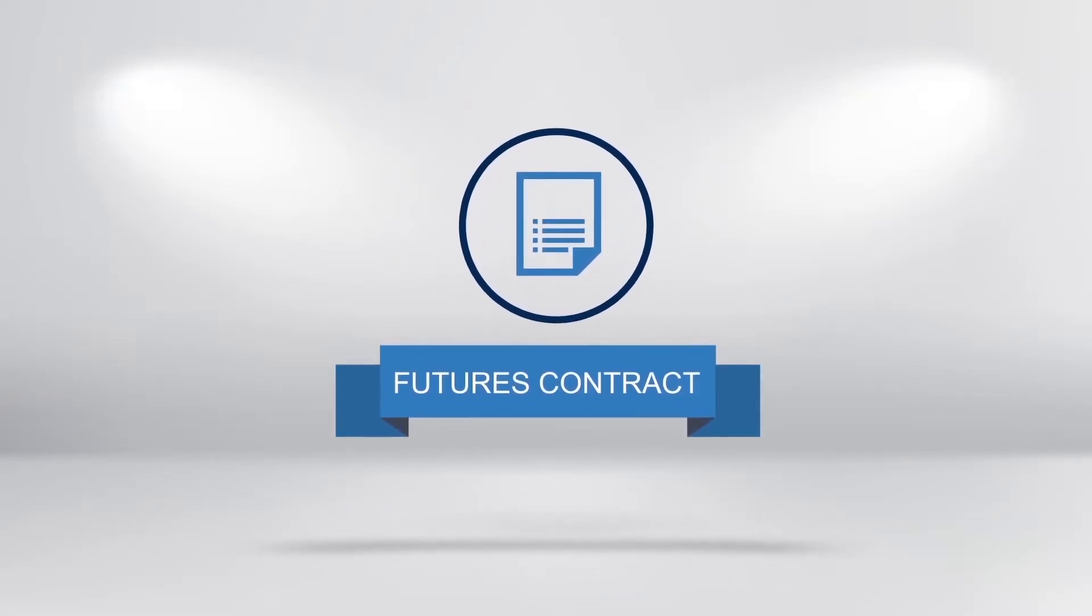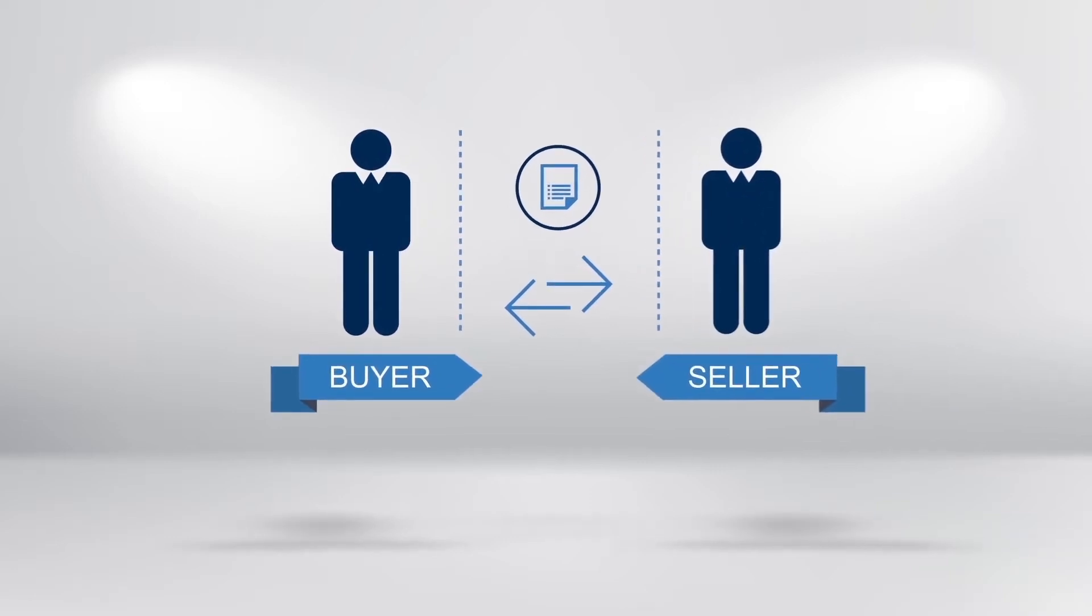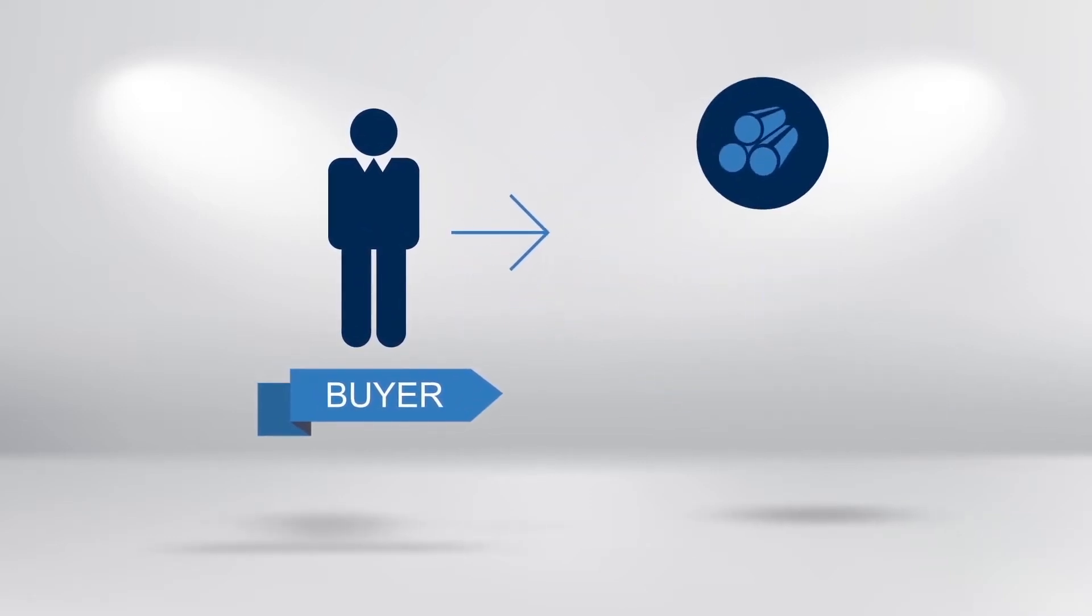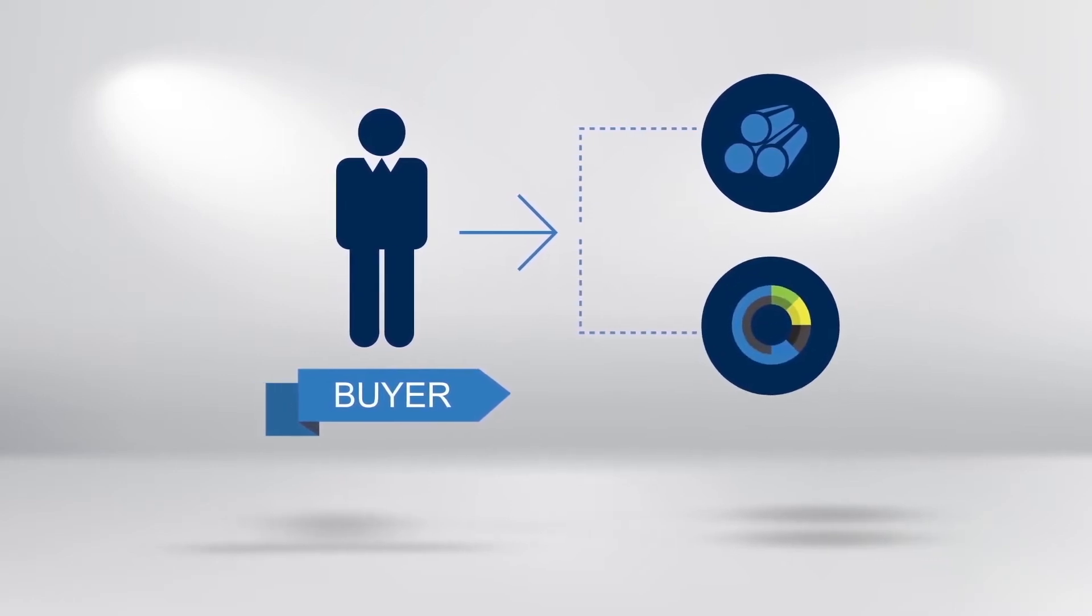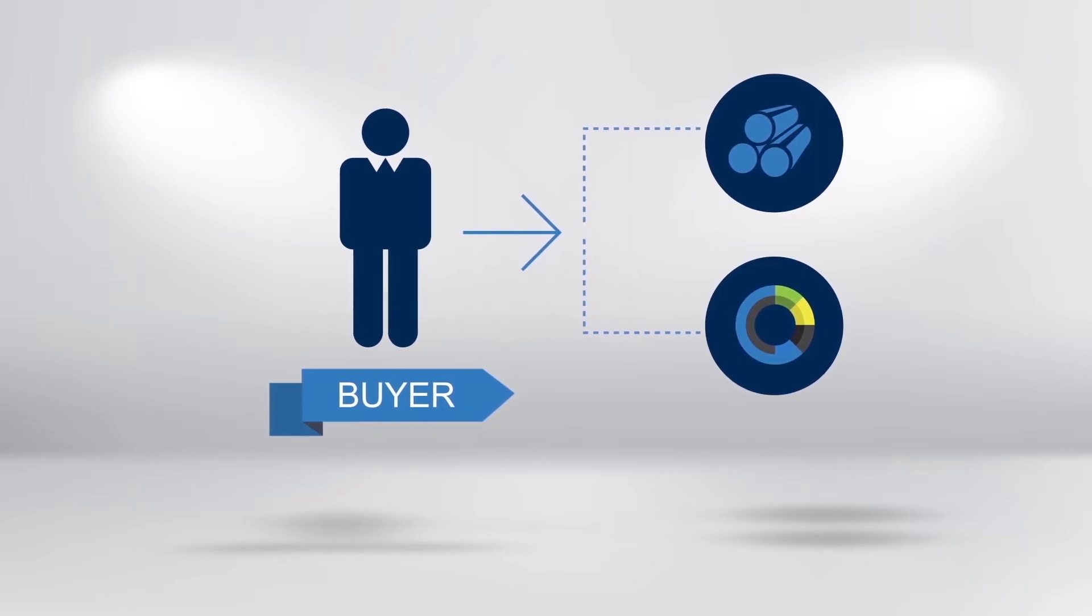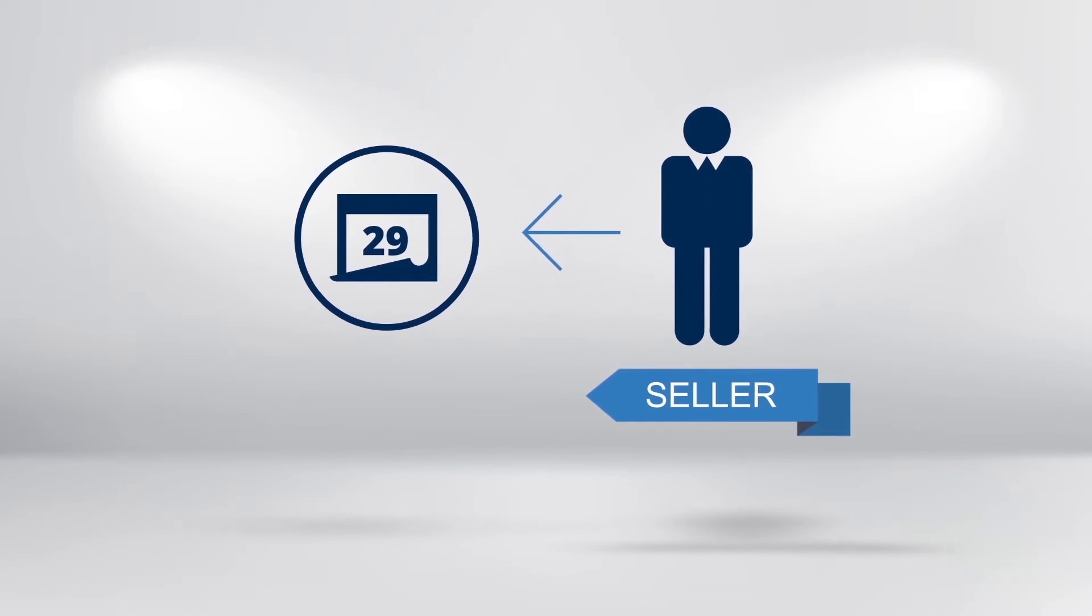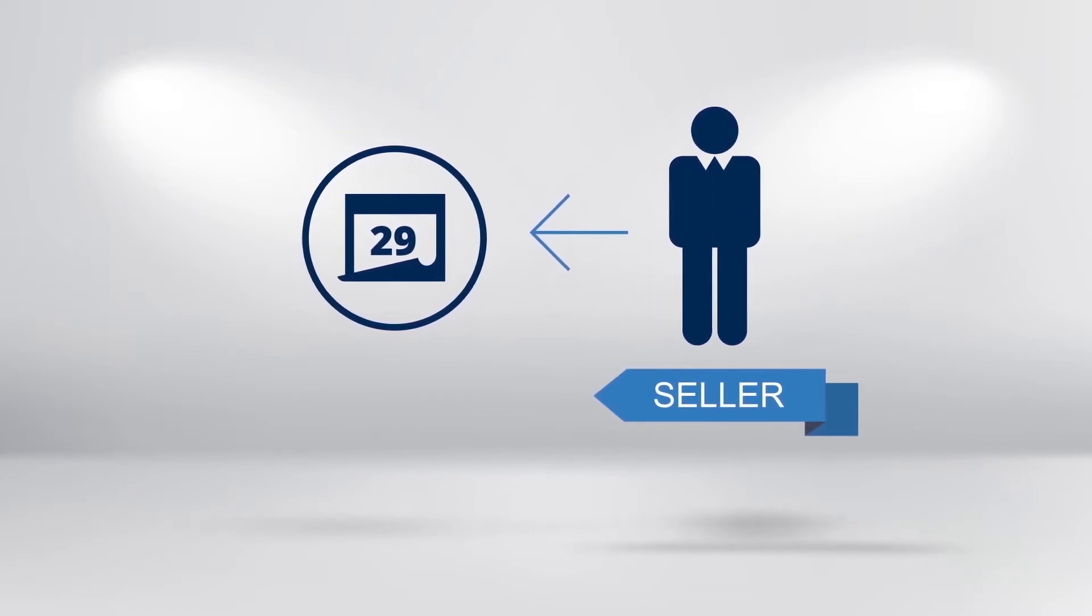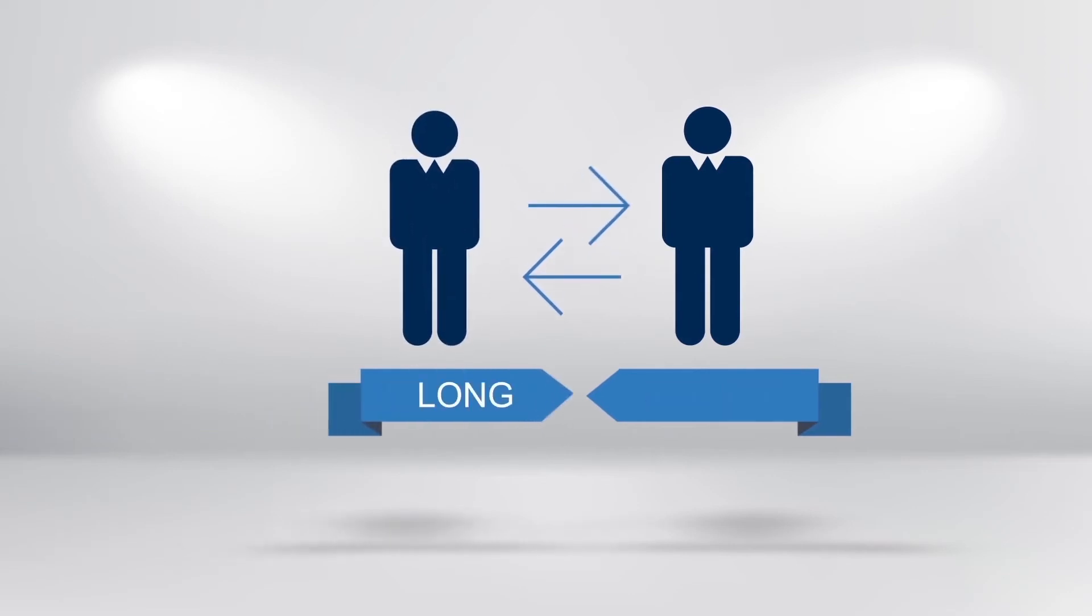The simple definition of a futures contract is that it is an agreement between a buyer and a seller. The buyer has the obligation to buy either a commodity or a financial instrument by a specific date at a specific price. On the other hand, the seller is obliged to sell the specified commodity or financial instrument by the specific date. The buyer is said to be long and the seller is said to be short.